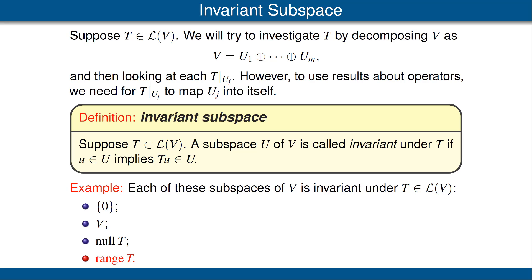Note that these four invariant subspaces are not necessarily all distinct. For example, if T is invertible, then the first and third subspaces are equal — the null space of T is {0}. Furthermore, if T is invertible, then the range of T equals the whole space V, so the second and fourth subspaces listed here are equal.